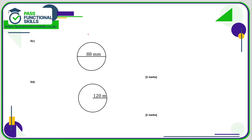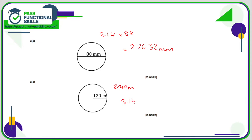For C, it's 3.14 multiplied by 88, and 3.14 times 88 is 276.32 millimetres. For D, we've been given a radius, so the diameter is 240 metres. So 3.14 times 240 comes to 753.6 metres.